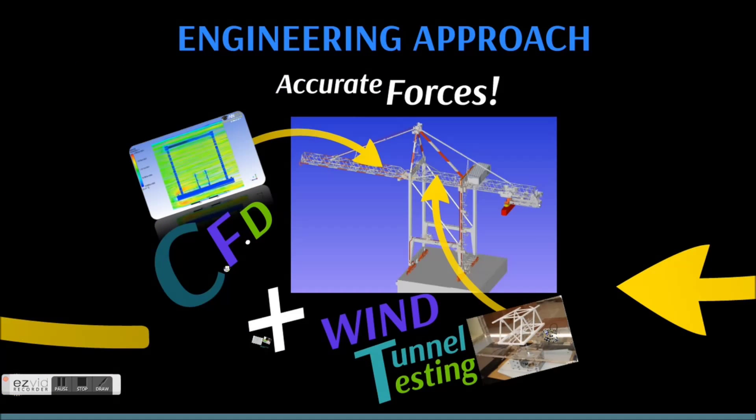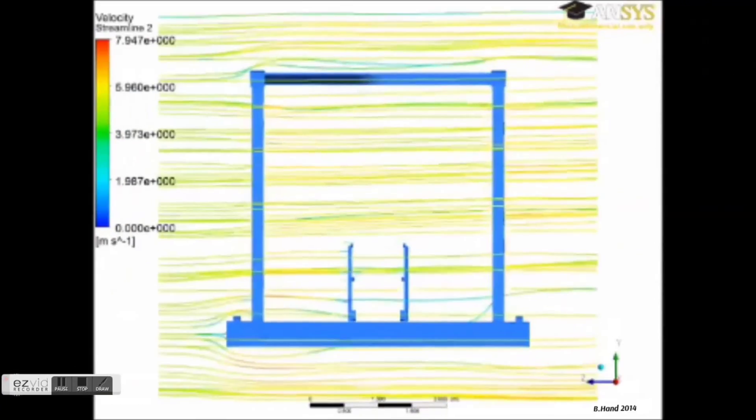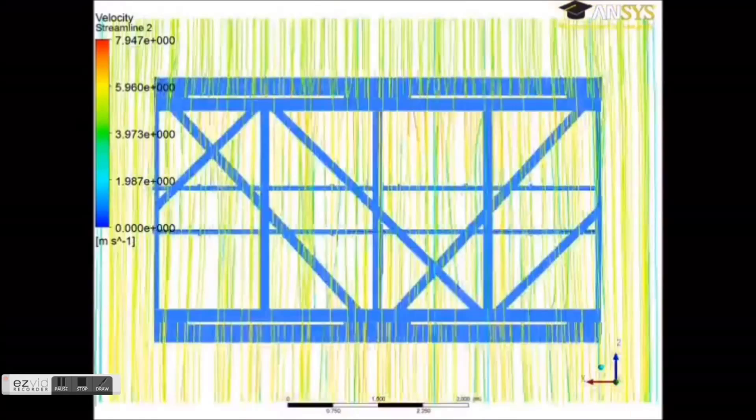For prototype production, it was necessary to establish the product design loads. This was accomplished primarily with the use of CFD or computational fluid dynamics, which allowed me to model wind loads on the crane structure.